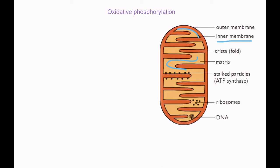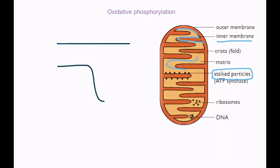Let's look at the structures important for understanding oxidative phosphorylation. The inner membrane folds to form cristae, and on the cristae we have stalked particles. Each stalked particle is made up of a protein channel and ATP synthase, which is an enzyme. Stalked particles are found all around the inner membrane of mitochondria.